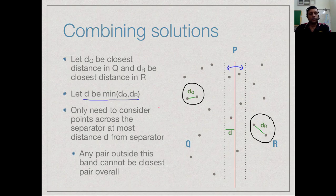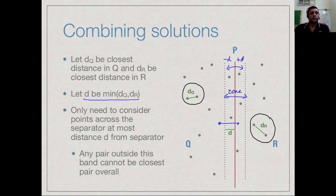The claim is that if we look at the zone within ±d distance from the separating line, any point outside this zone cannot pair with a point on the other side to give a distance less than d — because the distance would be d plus some extra amount. So it is enough to look at points inside this ±d zone on both sides. Any pair where one endpoint is outside the zone cannot be the closest pair overall.